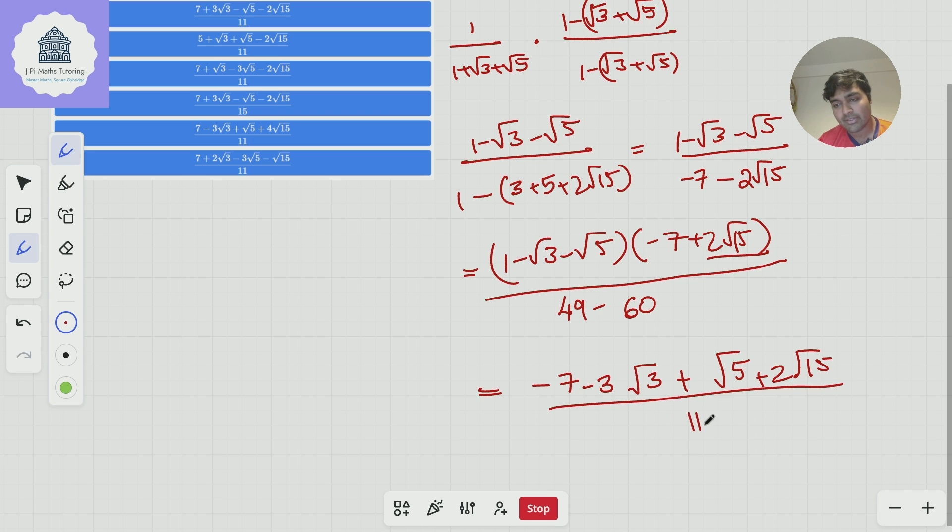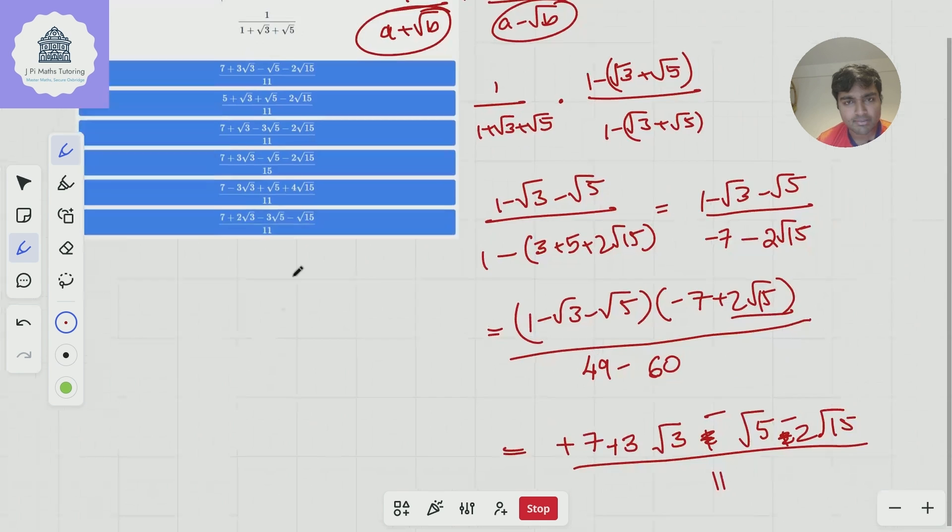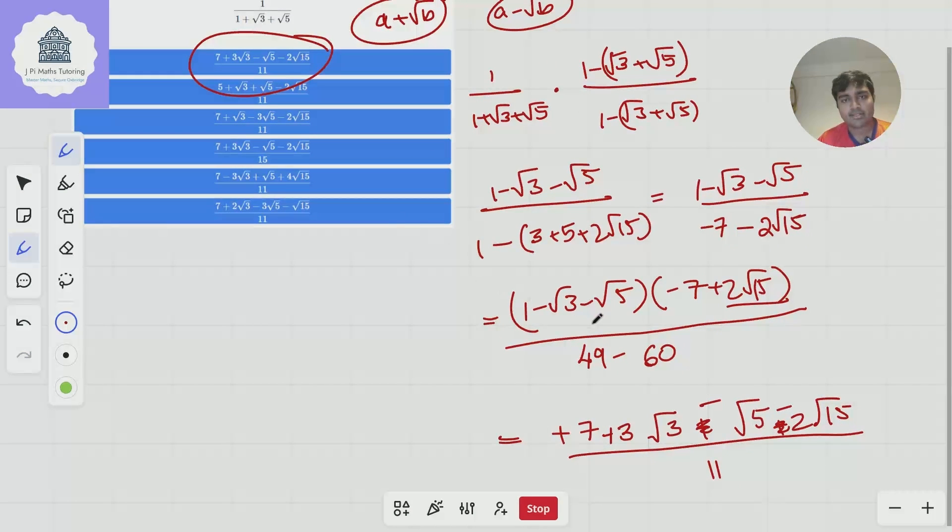So if I just make this a positive 11 and turn this positive and these guys negative that should be my final answer. And that is option one here, so the first guy up there.